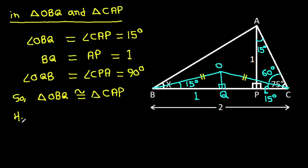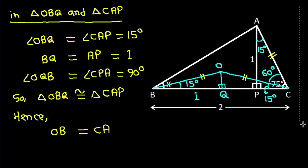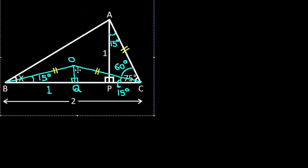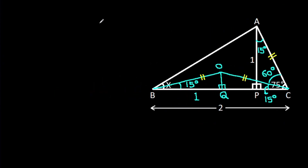So triangle OBQ is congruent to triangle CAP. Hence OB will be equal to CA.